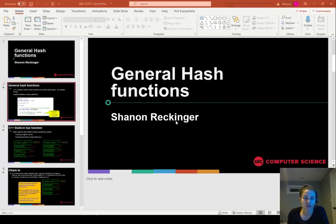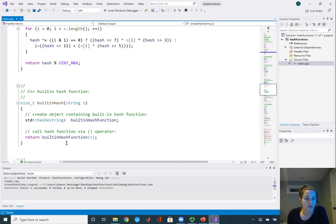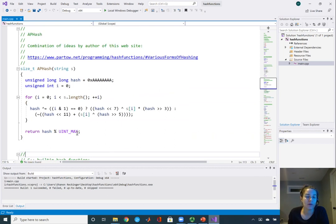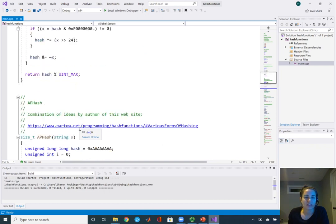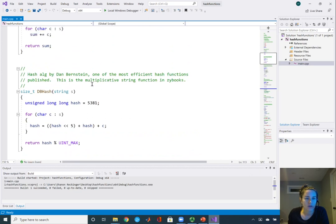I have a little demo that I want to show for this. Here is that code that I just showed you. This is the C++ built-in hash function—a general hash function that can work for any string key. It does a pretty good job, and there's a ton of other general hash functions that you can find. Zybooks shows you this one here, it's called the multiplicative string function.